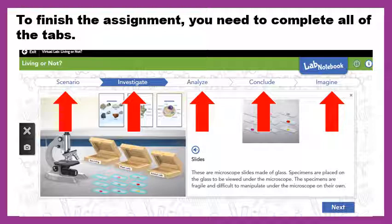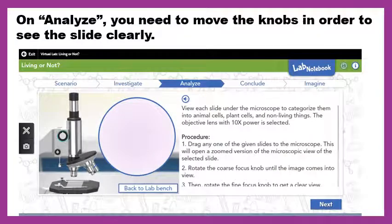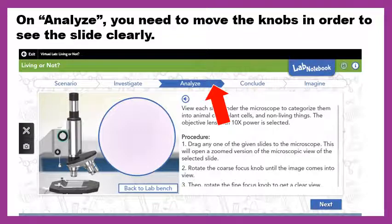If you see the picture of the microscope, slides, and boxes, it's all interactive. If something is outlined in blue, it usually means it wants you to click on it. You can even click on the posters in the background — everything will expand and become bigger so you can actually read it. On the Analyze tab, you're going to be doing most of your work.